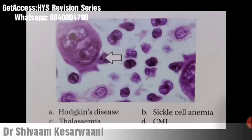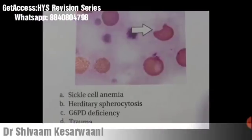This is the most commonly asked image — can you name it? Yes, it is Hodgkin's disease, and what you are seeing here is the Reed-Sternberg cell showing the owl's eye appearance. This is the most easy and most common one in this video.